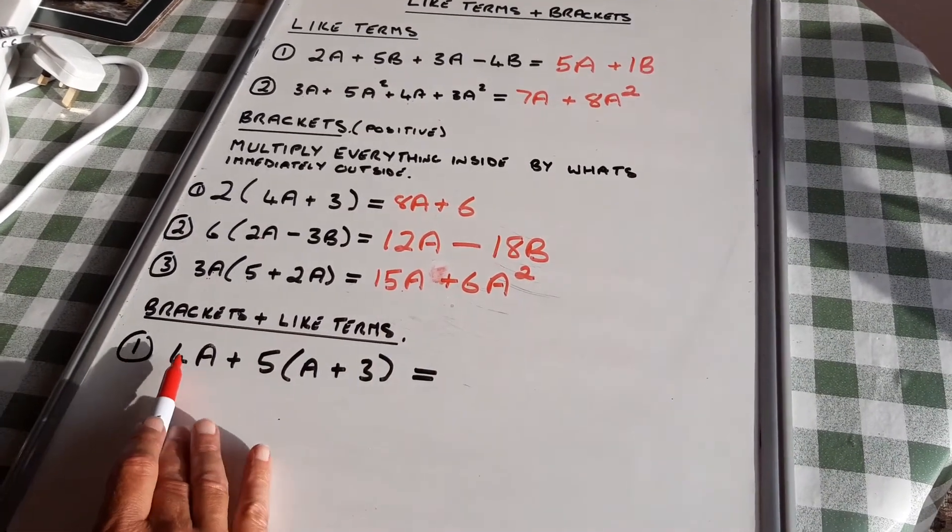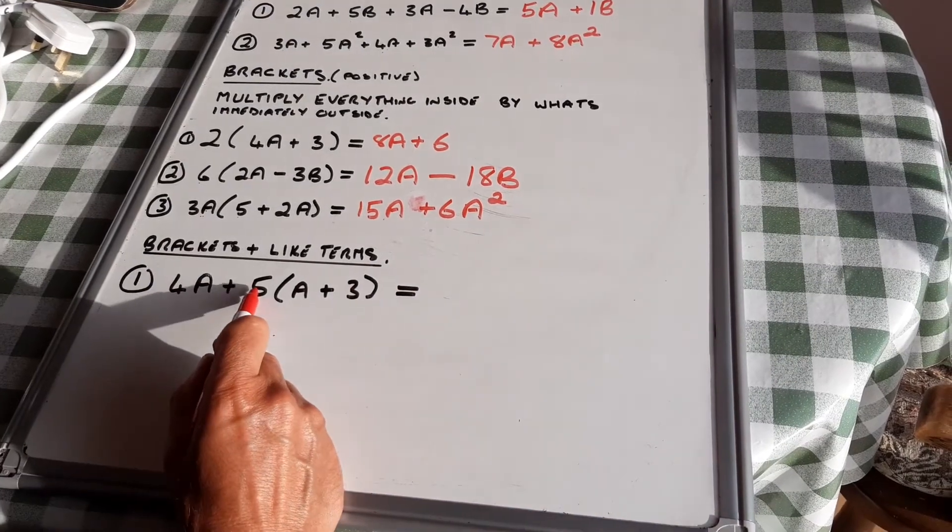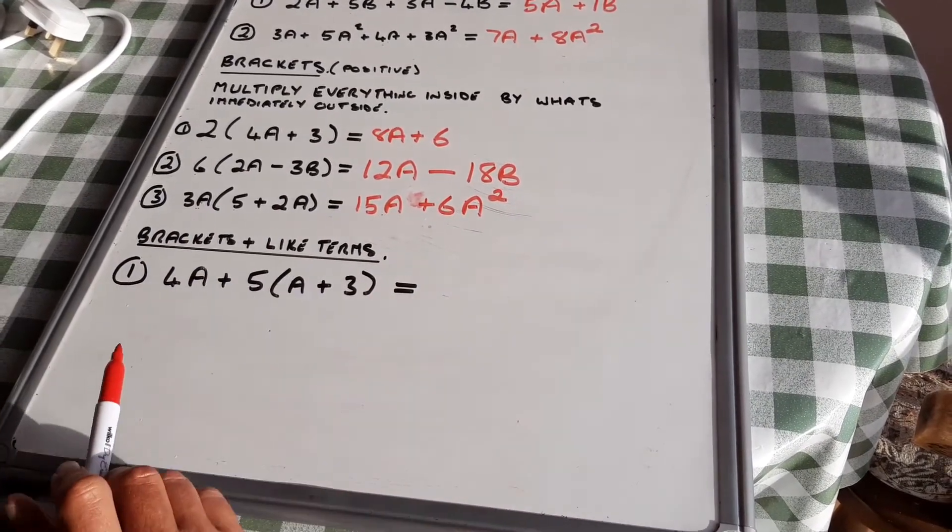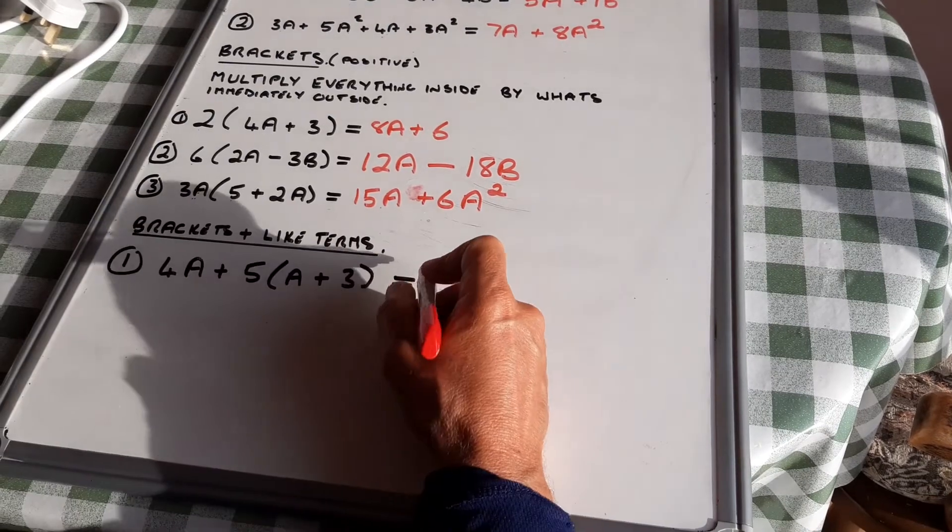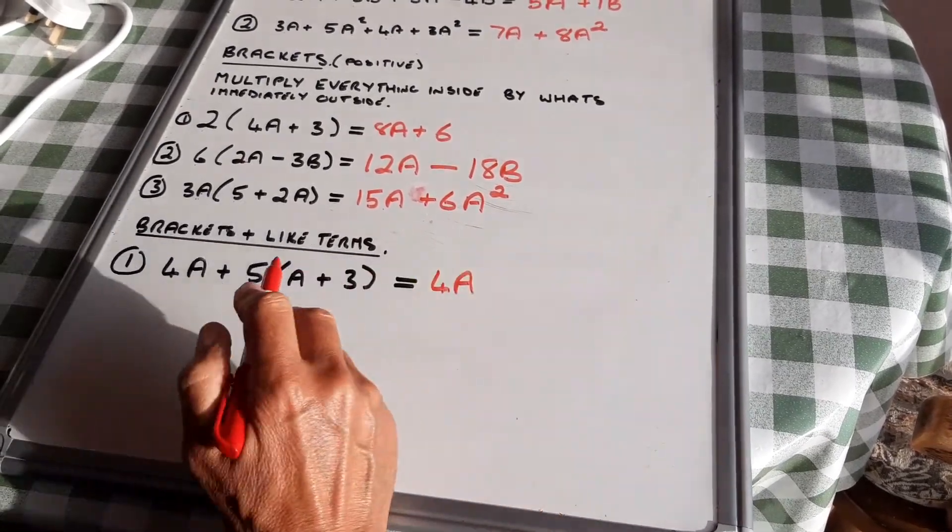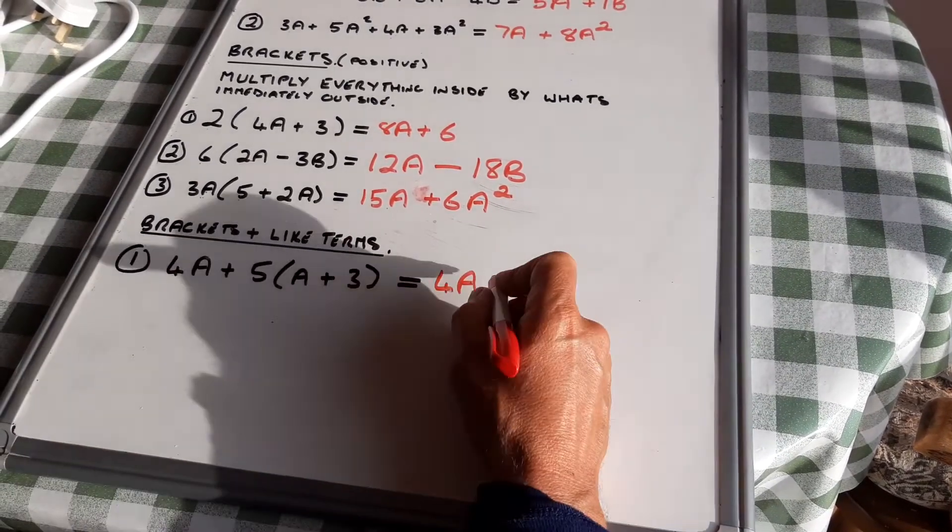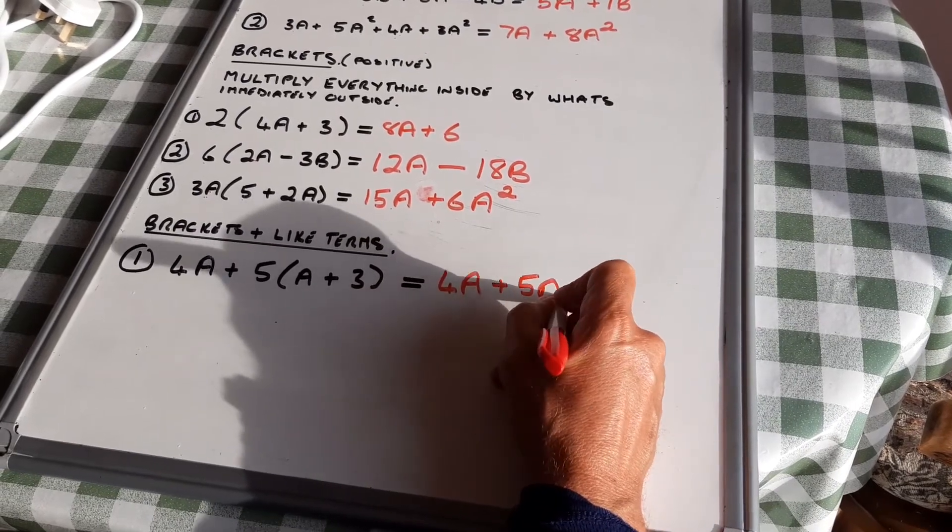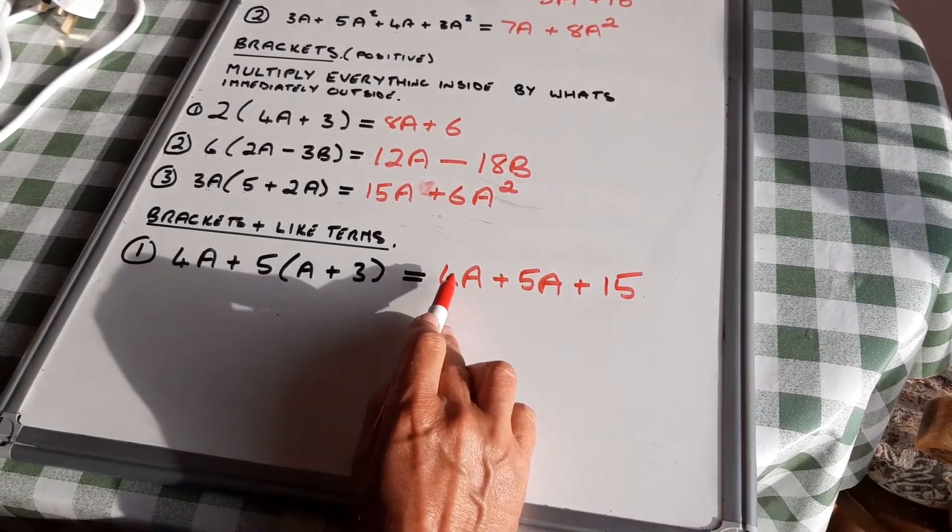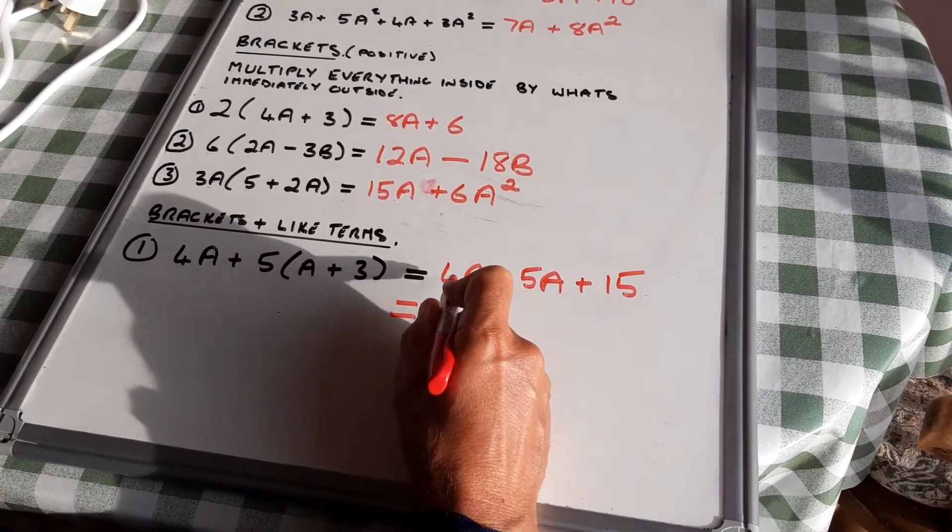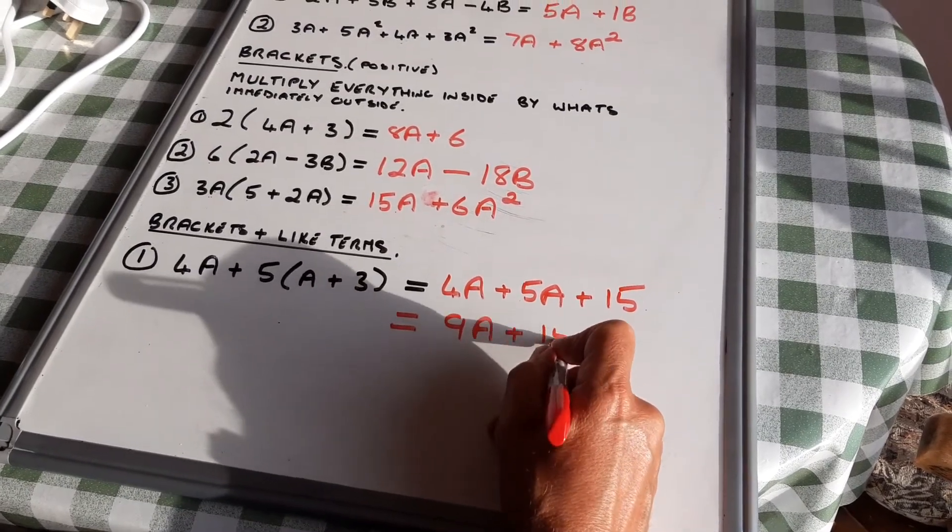And then we're going to finish off by putting them together. I've got 4a there and a 5 outside the bracket there. I need to sort the bracket out first. So I'm going to write the 4a down, and then I'm going to sort this bracket out. 5 times a is 5a, 5 times 3 is 15. I join my a's together: 4a plus 5a is 9a plus 15.